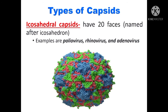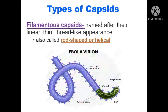There are different types of capsids. One type is called icosahedral capsids, which have 20 faces. Examples of this capsid type are poliovirus, rhinovirus, and adenovirus.